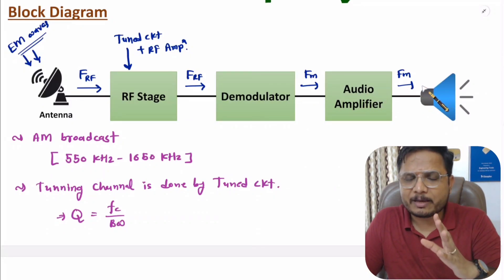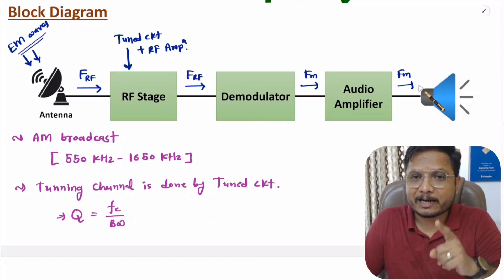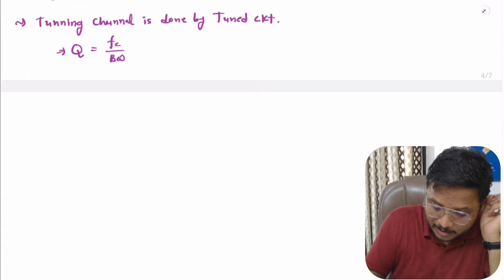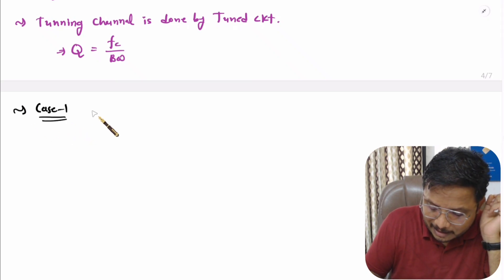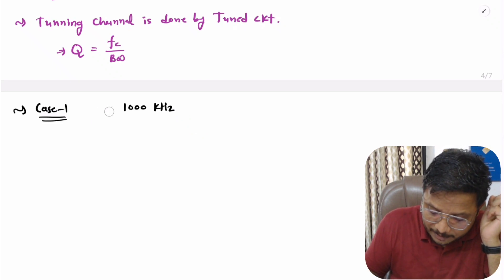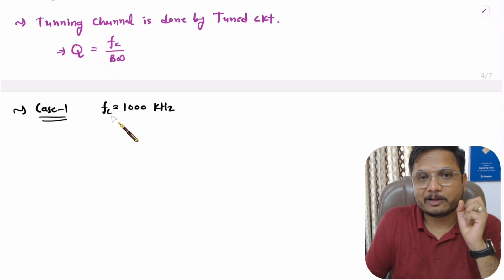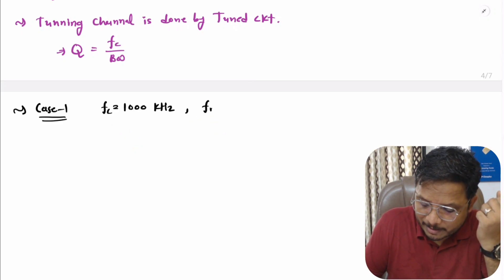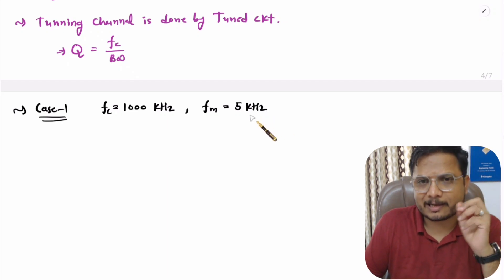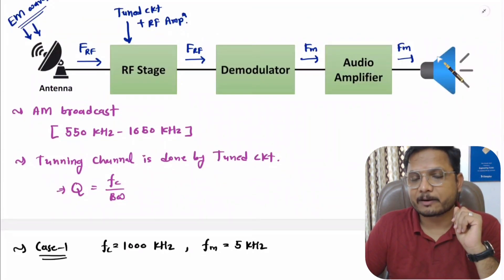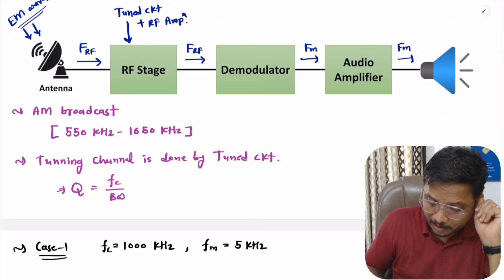After demodulation we will have the audio message signal, which is weak, so after amplification we give it to the amplifier. Now let me consider a few case studies to understand the issues with this block diagram. In case one, I'll consider one channel at 1000 kilohertz as the center frequency. With voice communication, the message signal will have frequency up to 5 kilohertz.